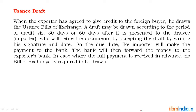The second type is the usance draft. When the exporter agrees to give credit to the foreign buyer — such as 30 days or 60 days credit — he draws a usance bill of exchange. The importer retires the documents by accepting the draft, writing a signature and date. On the due date, the importer makes payment to the bank, and the bank forwards the money to the exporter's bank. In cases where full payment is received in advance, no bill of exchange is required to be drawn.